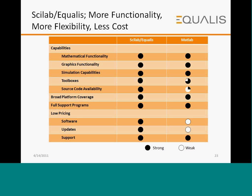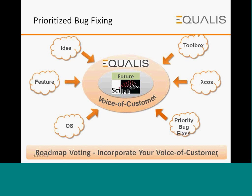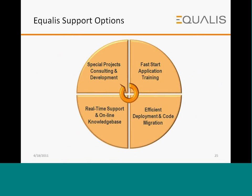Scilab is open source — you can download and use it for free. Going forward, it's important that customer feedback is taken and incorporated into the product roadmap. That's something Equalus provides — whether it's simple bug fixes, adding a new toolbox, adding a feature, new ideas, making compatibility for operating systems, or a new feature in XCOS — all of that feeds into roadmap voting and incorporation into the next product release.